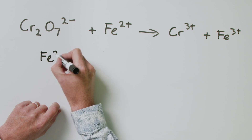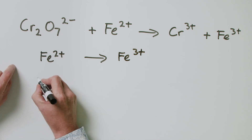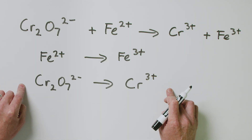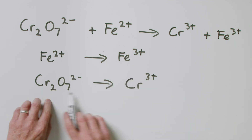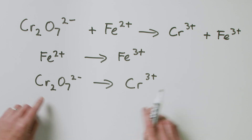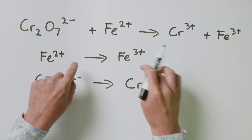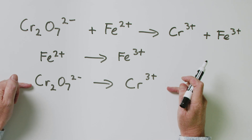We're going to have Fe2+ going to Fe3+, and we're going to have Cr2O7 2- going to Cr3+. These are what we call our two half equations — essentially half of the overall process that is occurring. In terms of balancing these half equations, two conditions must be satisfied: number one, the same number of atoms on both sides of the arrow; and number two, the same overall charges on both sides. Balancing the top one is straightforward; balancing the bottom one is a little more involved.